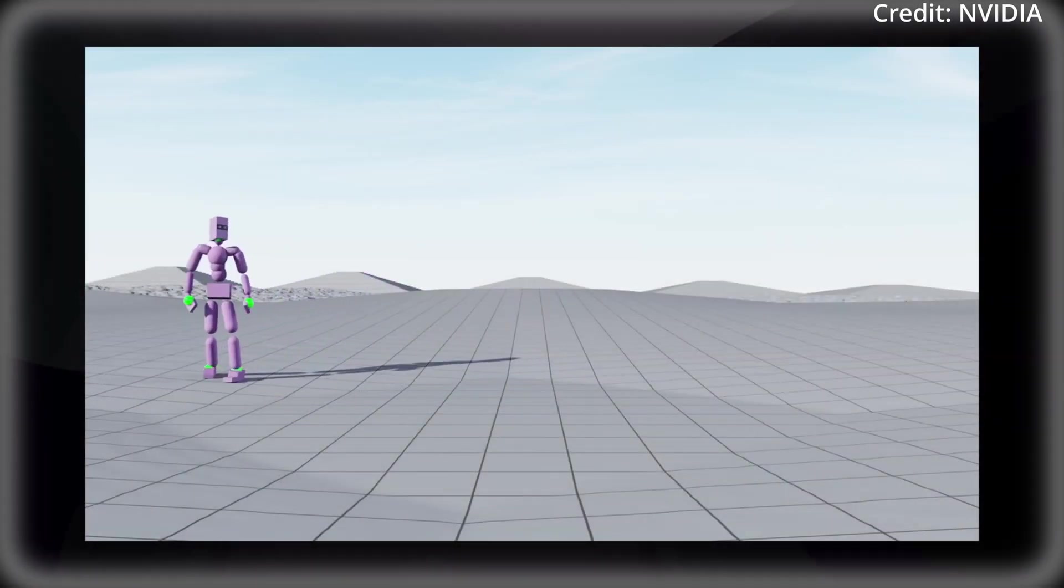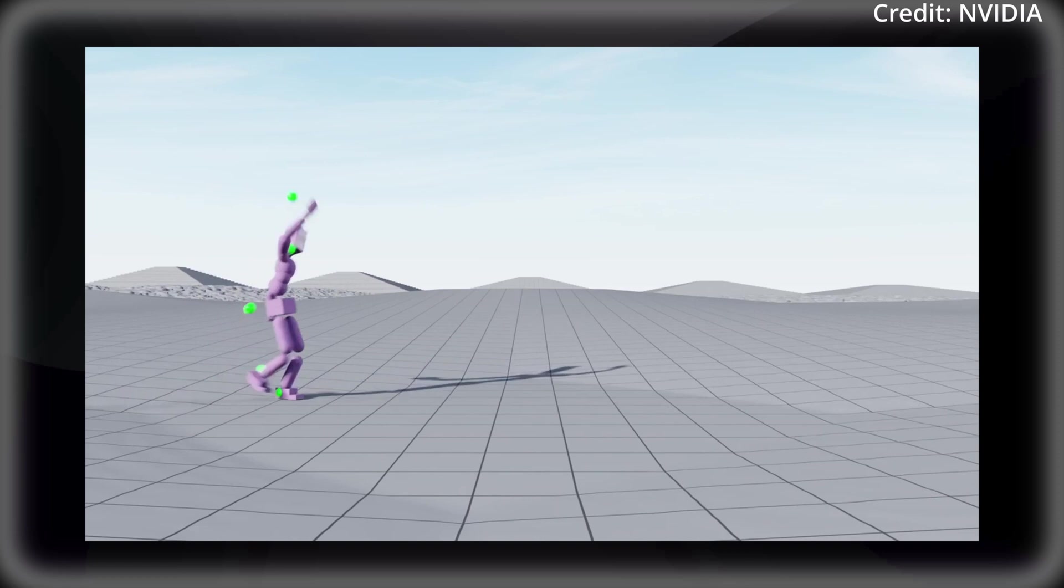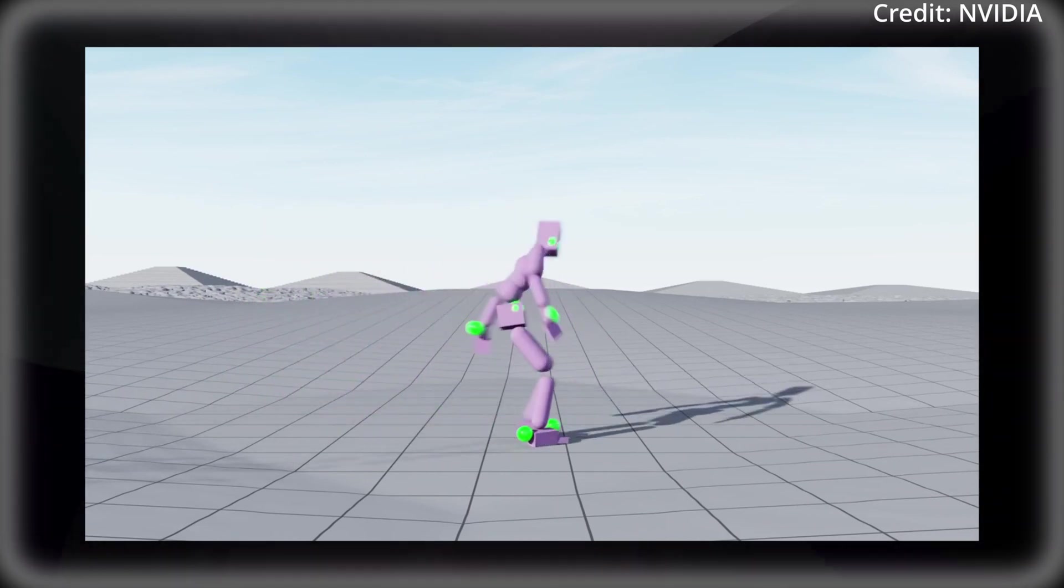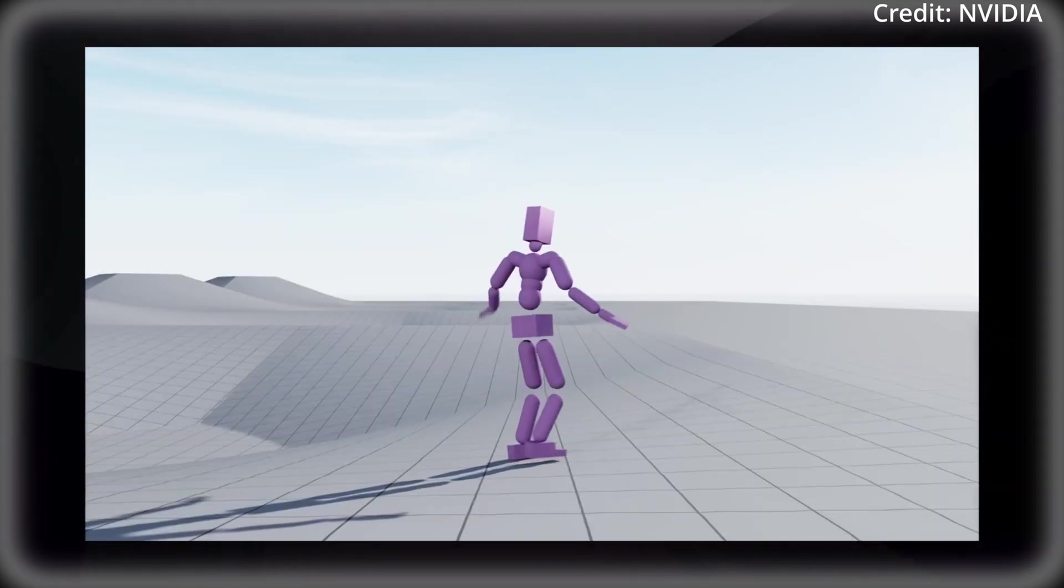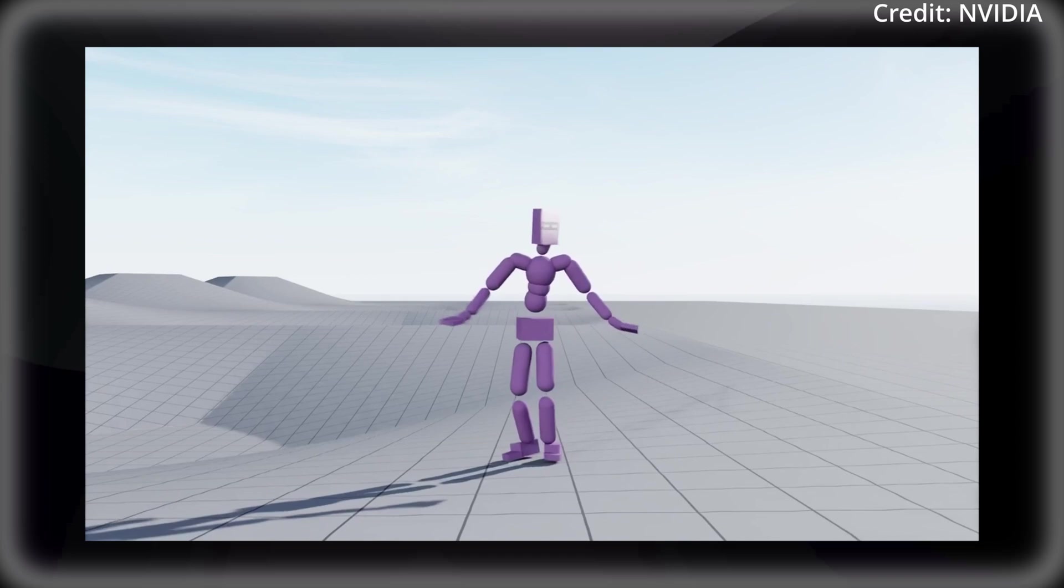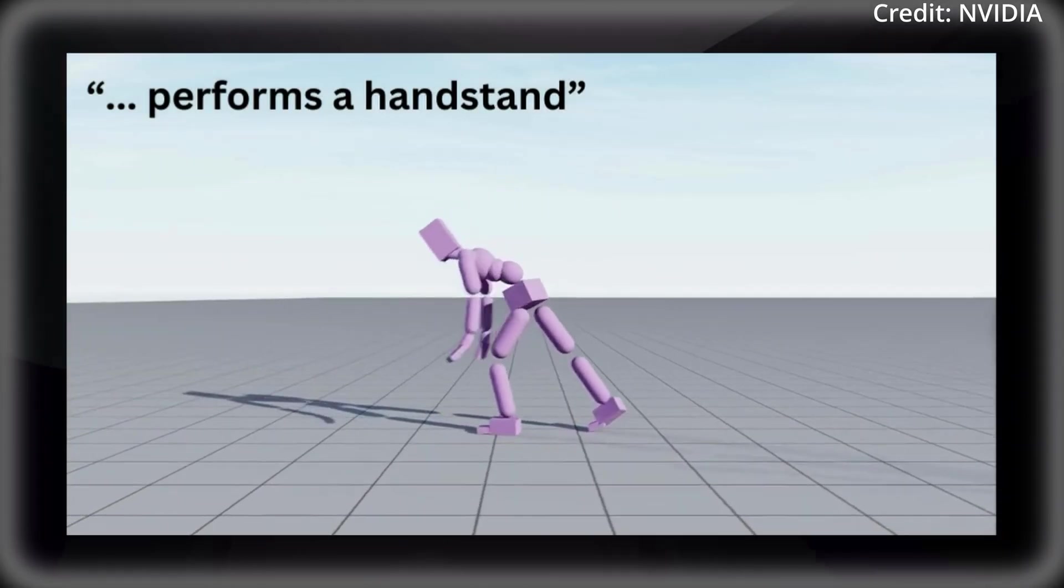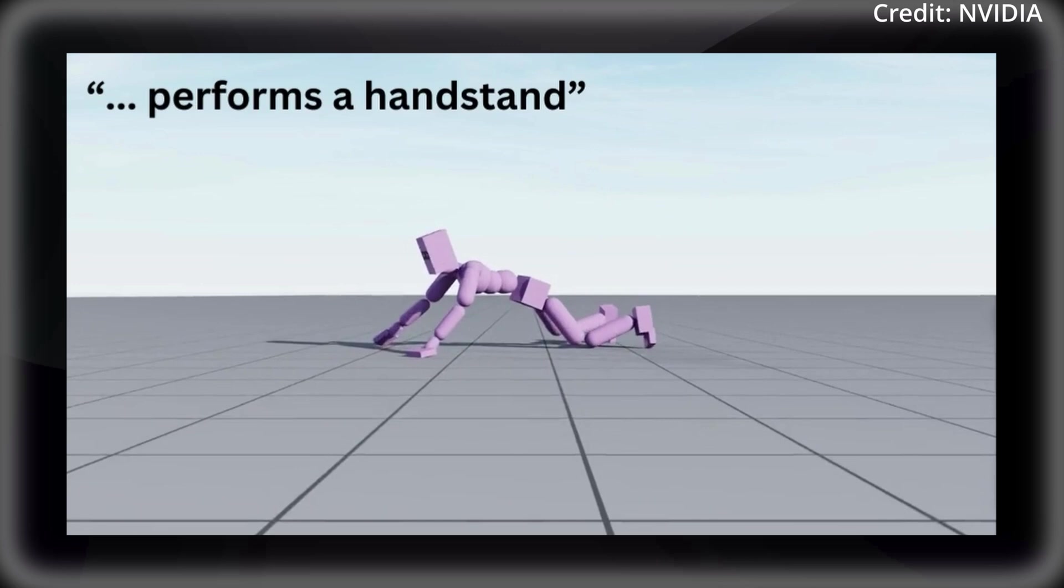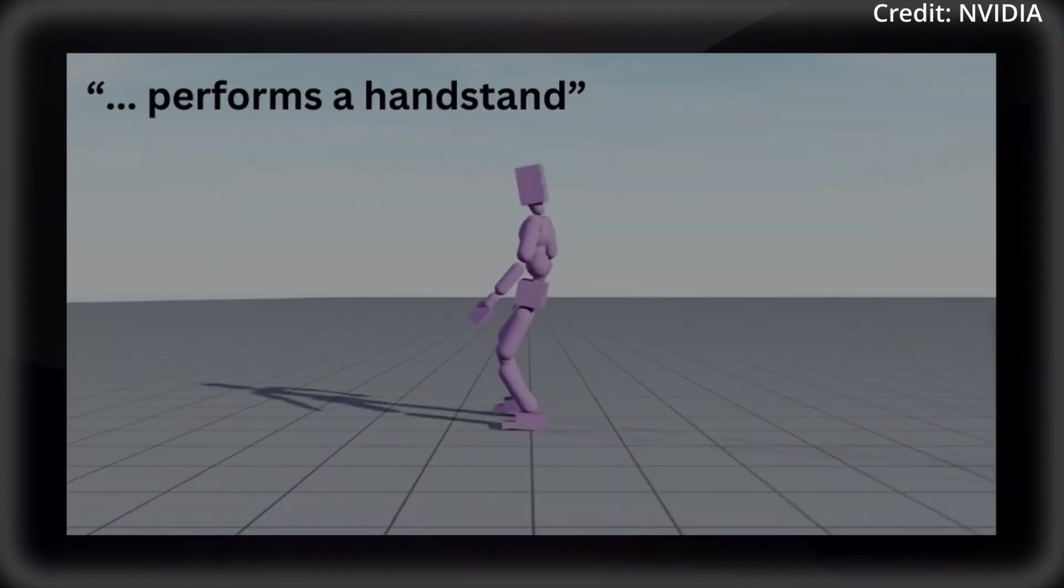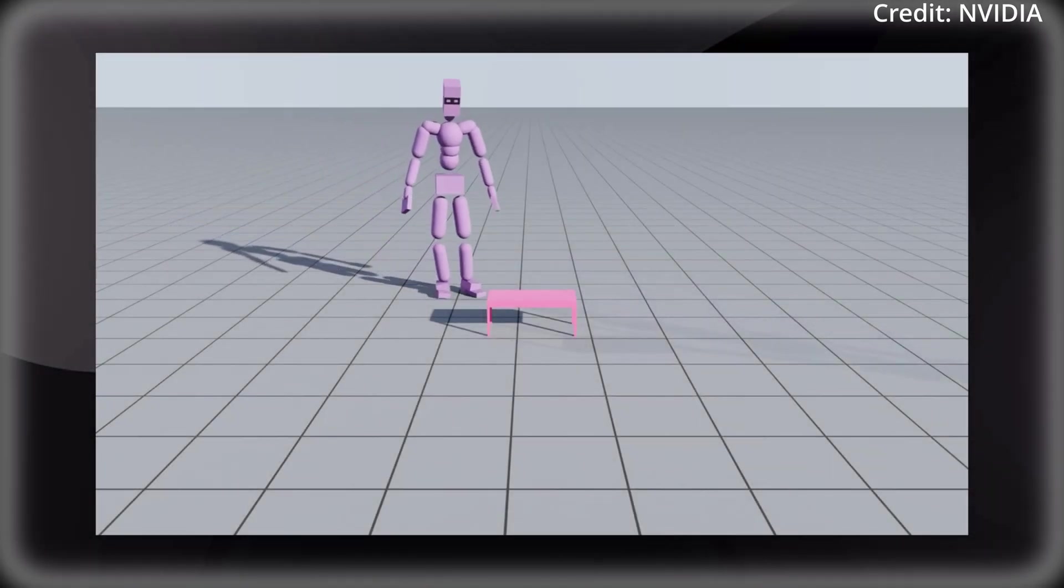Plus, Masked Mimic also supports text-to-motion control, allowing users to instruct the AI to perform specific tasks through natural language commands. From balancing on one foot to attempting a handstand, the system can interpret and execute a wide range of instructions. Moreover, it interacts naturally with objects, using high-level control commands and generating appropriate interactions based on object-bounding boxes.